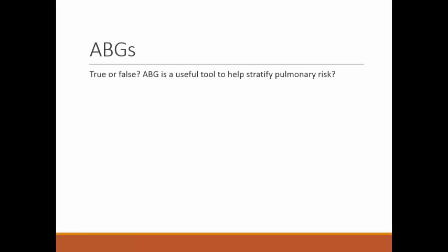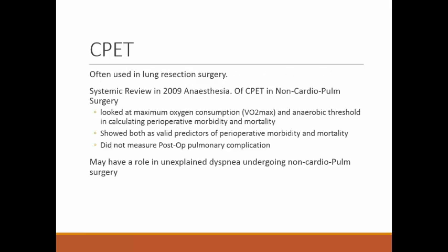ABGs: no data suggests ABGs help stratify pulmonary risk for non-thoracic, non-cardiac surgery. Similarly, CPETs: a 2009 systematic review in Anesthesiology found that maximum oxygen consumption and anaerobic threshold were predictors of perioperative morbidity and mortality, but did not specifically examine postoperative pulmonary complications. CPET should not be ordered routinely — the exception being unexplained dyspnea in someone undergoing non-cardiopulmonary surgery, where evidence supports its use for risk stratification.